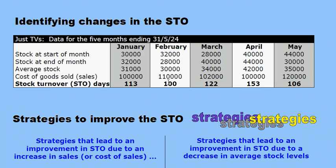Between February and March, the stock turnover went from 100 to 122 days — that's more days, indicating less efficient management of stock. There has been a fall in sales or cost of sales, so a reduction in sales. But the average stock levels have actually increased, meaning stock levels are rising even though less stock is being sold, which indicates less efficient management of stock.